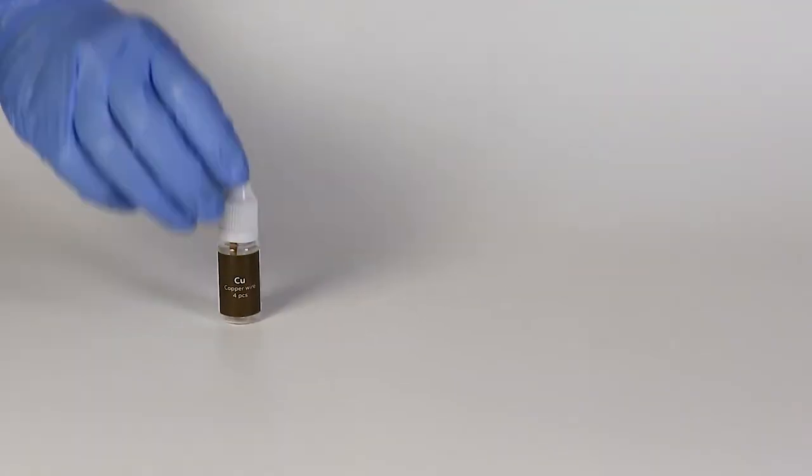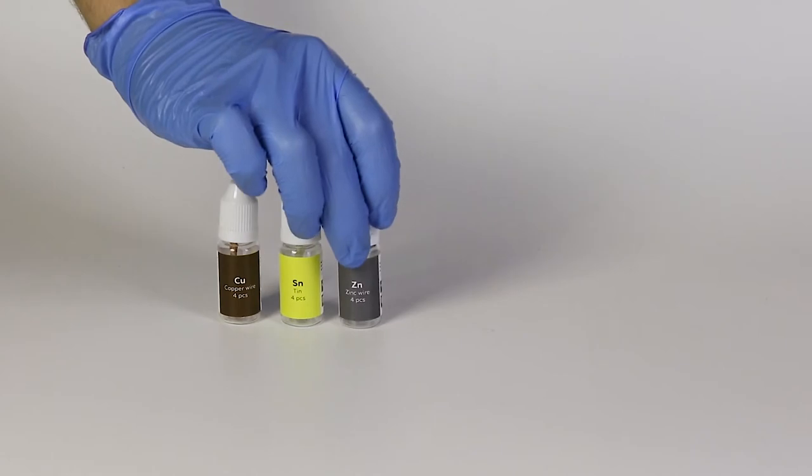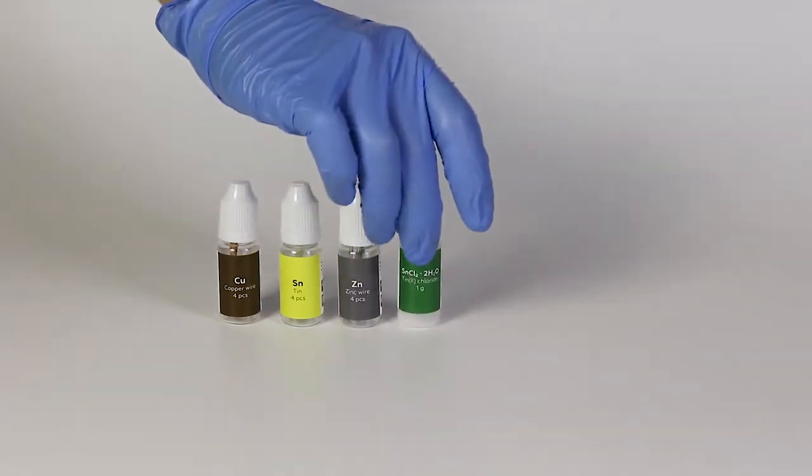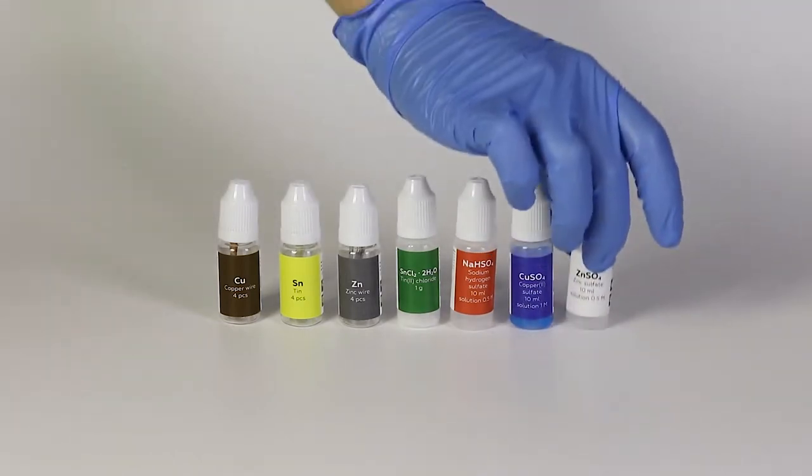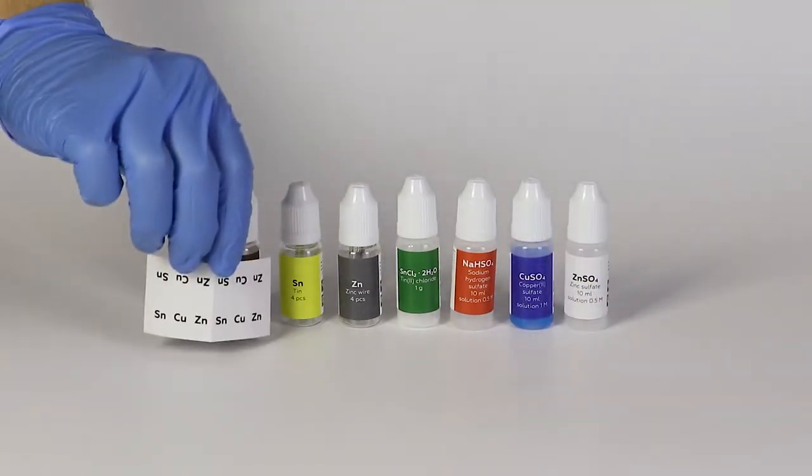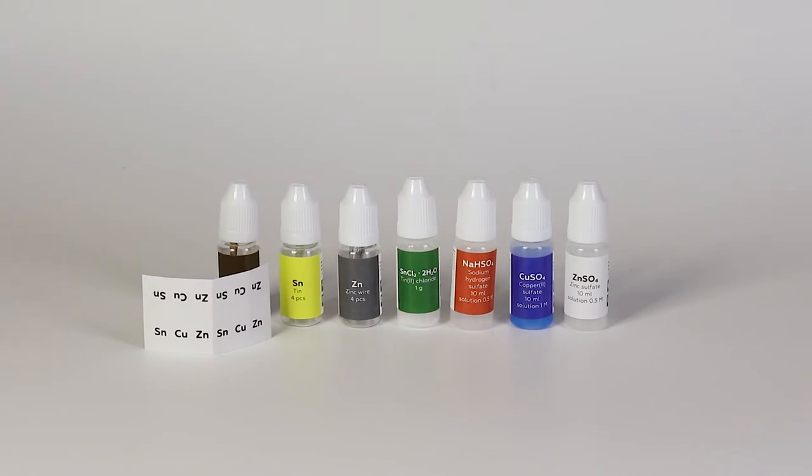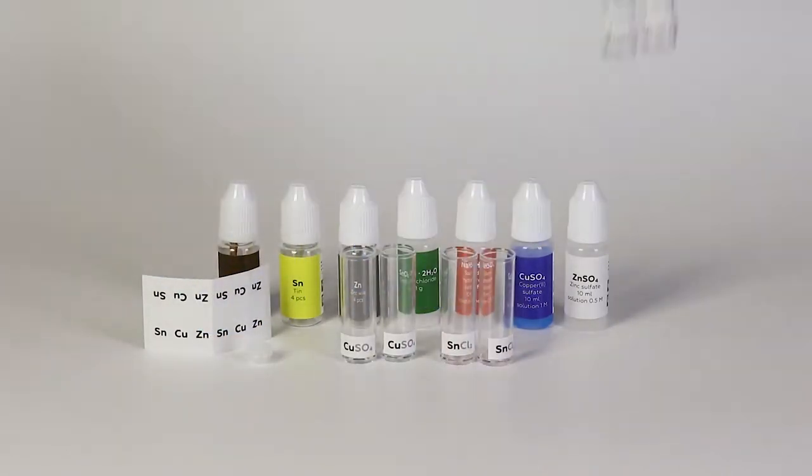For the Metal Contest experiment, you will need metallic copper, tin and zinc, tin chloride, and solutions of sodium hydrogen sulfate, copper sulfate, and zinc sulfate. As well, you will need a set of stickers with the metal symbols, a nozzle for a bottle, six plastic vials with the stickers of salt,